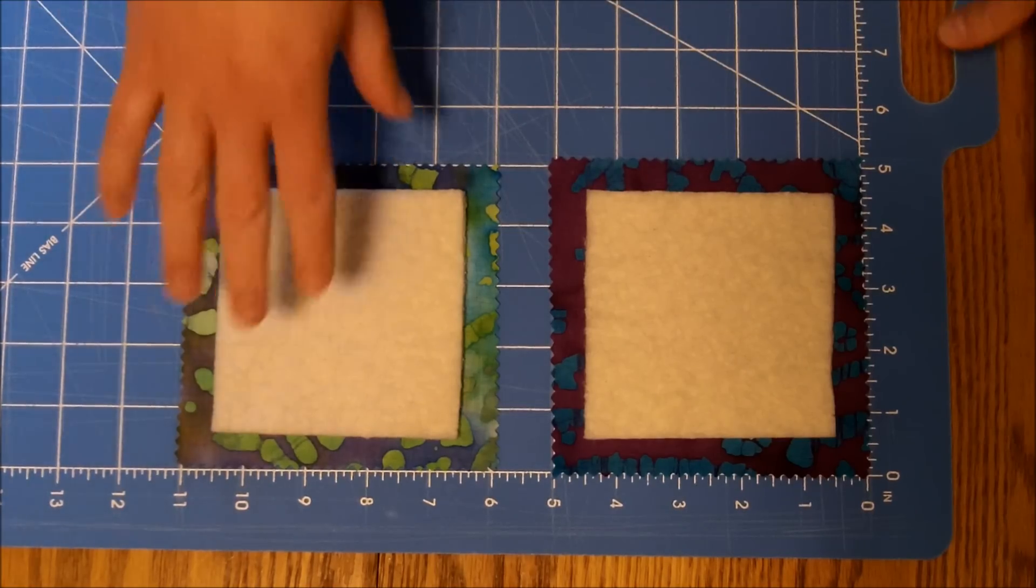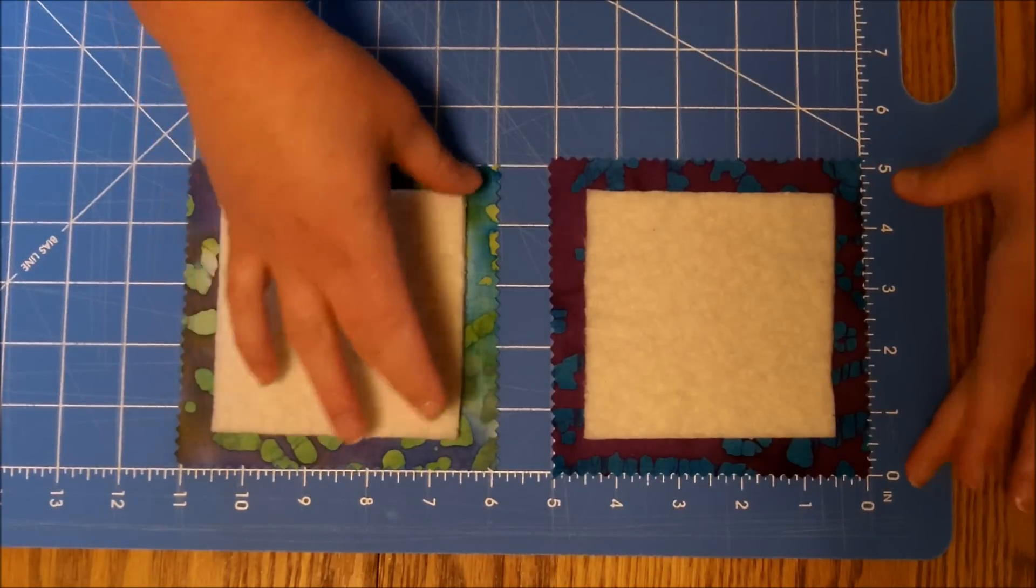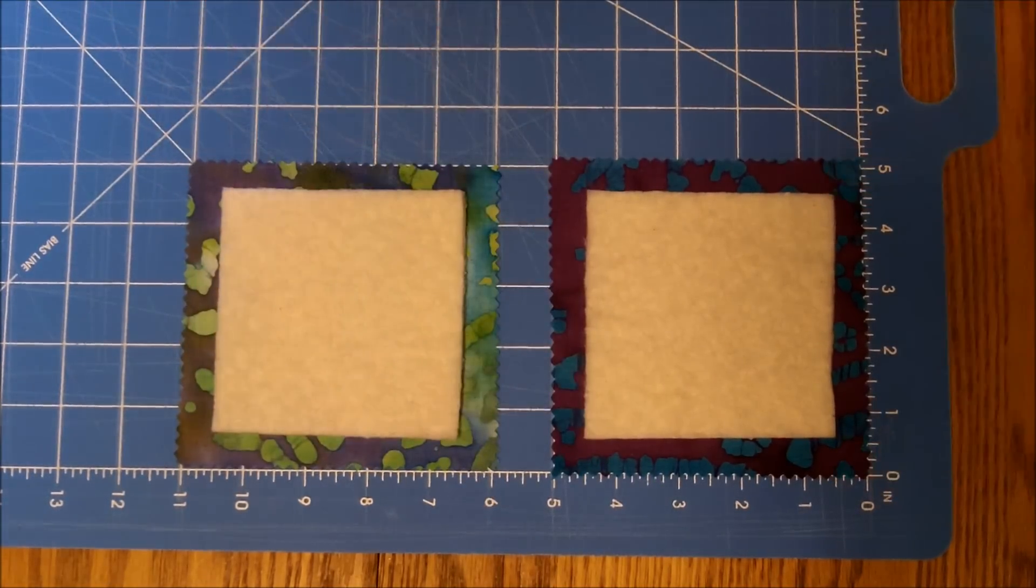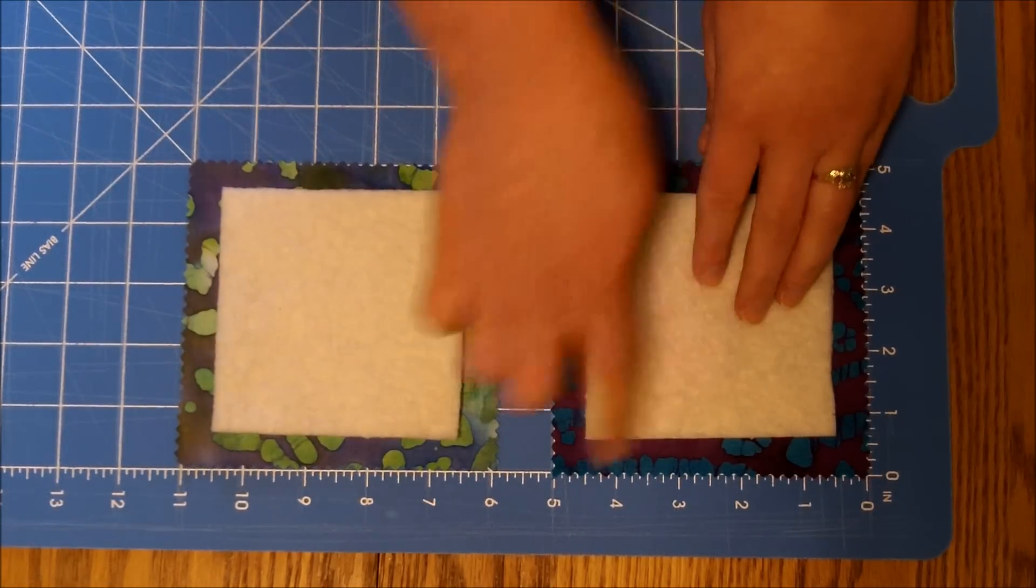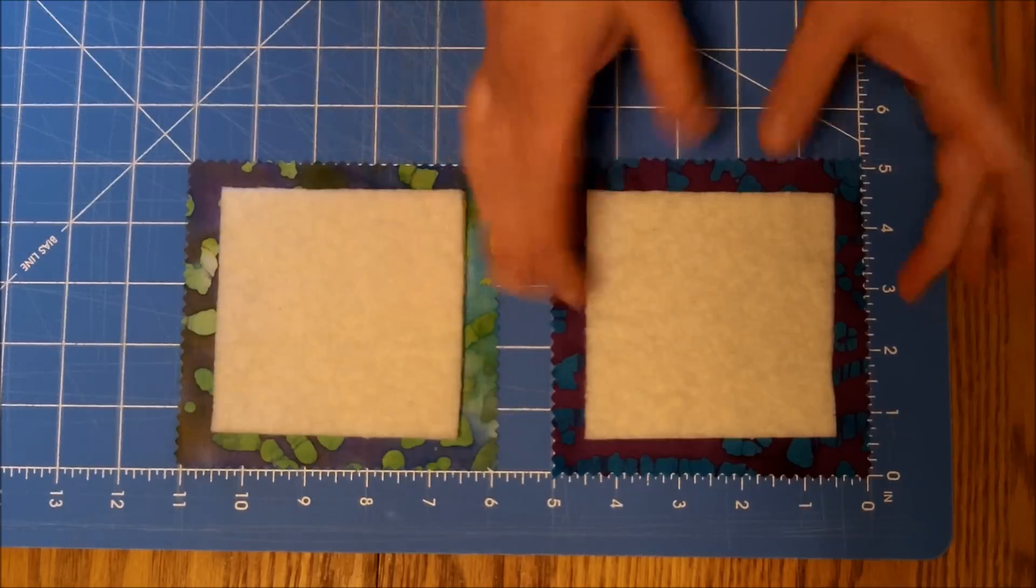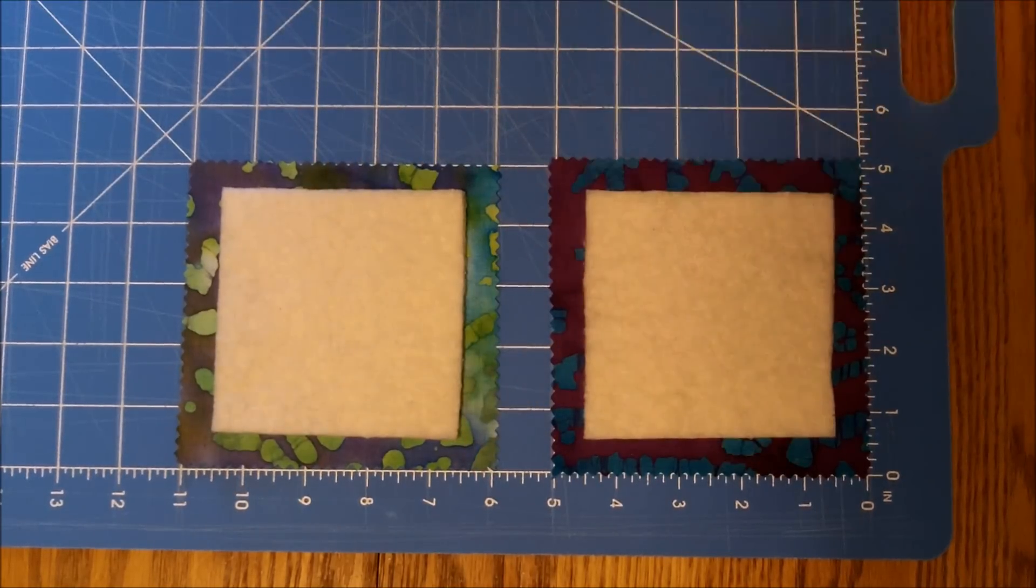Start out, take your backing. We're using scraps. I have a scrap backing that's five by five. Lay it down and then take your matting, cut it smaller, about a half inch smaller than your backing, and lay it on top.